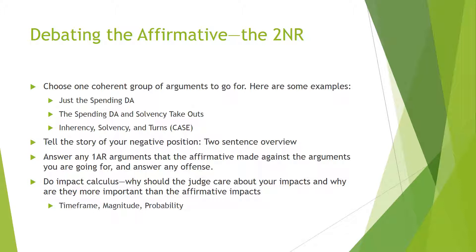In the 2NR, you should choose just one coherent group of arguments to go for — for example, just the spending disadvantage, the spending disadvantage and some solvency attacks, or inherency, solvency, and offensive case turns. It's important to tell the story of your negative position with a two-sentence overview to explain how your positions work together. Answering any 1AR arguments against positions you're actually going for and answering offense should be the bulk of your speech. Lastly, do impact calculus: why should the judge care about your impacts, and why should they value them more than the affirmative impacts?